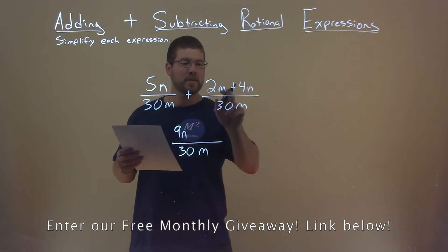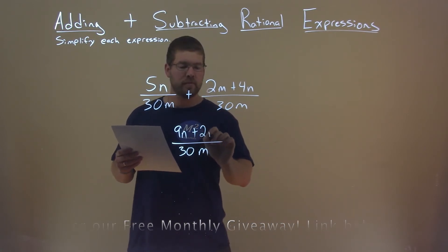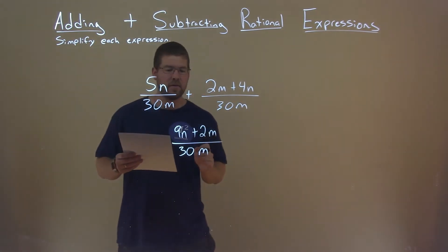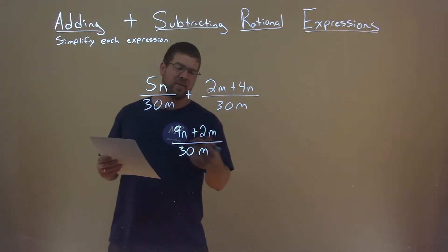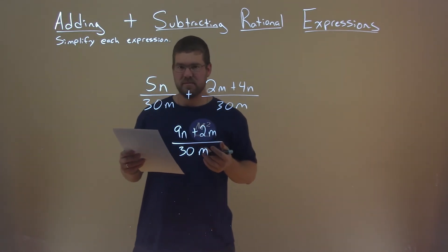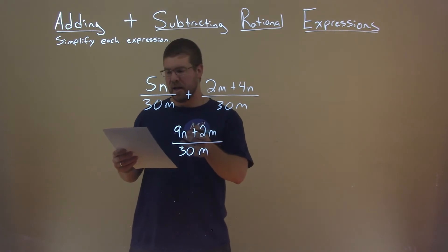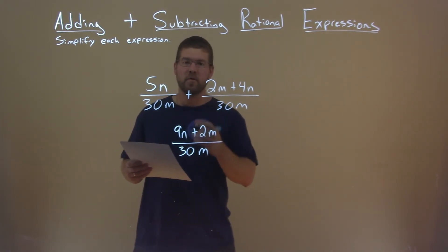Then we just have one 2m left over, and there we go. Now there's nothing else that we can simplify here, so we're done. 9n plus 2m divided by 30m is our final answer.